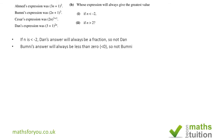Now we compare Ahmed, Bumnis, and Cesar. Bumnis will always give a figure less than zero for n less than −2. For instance, if n=−3, we get 2×(−3)=−6, and (−6)³ gives a number less than zero — that applies to any number less than −2. So it's not Bumnis. We now compare Ahmed and Cesar.